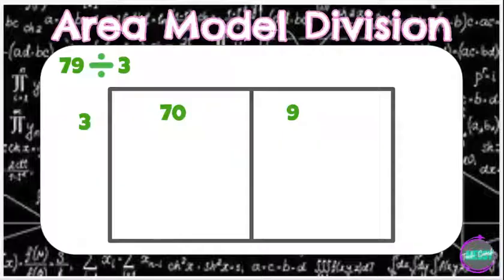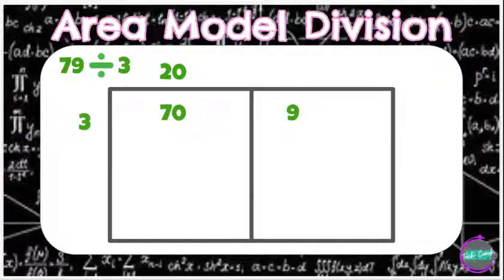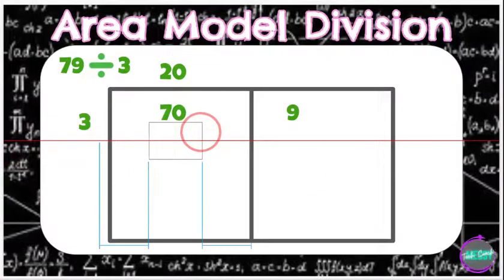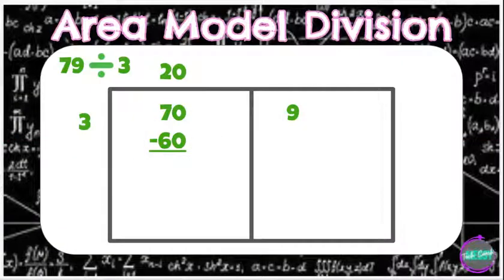So I know that 3 times 2 is 6, and I know if I add a 0 to that 2, it'll be 20, which adds a 0 to my 6, which would make it 60. So I'm going to do 3 times 20 to get an answer of 60. So I'm going to put my 60 underneath my 70, and I'm going to subtract. 70 minus 60 is 10.